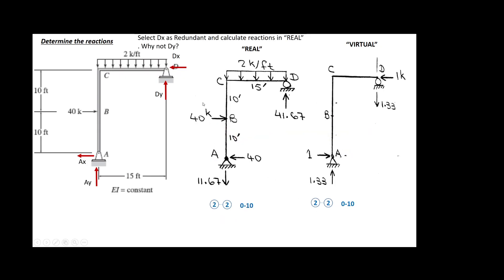Now I do another section. I like measuring x always from the previous section. So if this is x and I want to calculate this M, doing summation of moments at this point gives: positive M plus 40 times x minus 40 times (10 plus x) equals zero. When you solve it you get a moment function of 400 and only 400. For the virtual small m, you do the same thing.